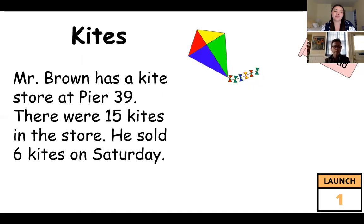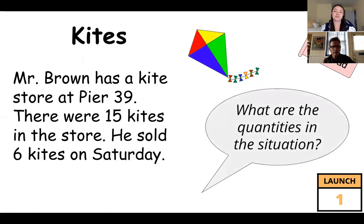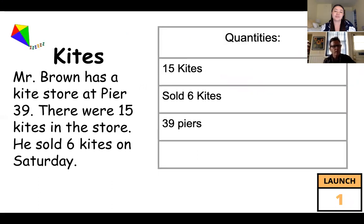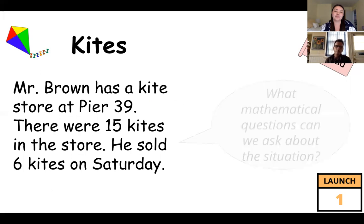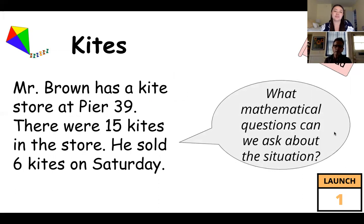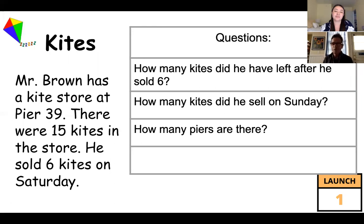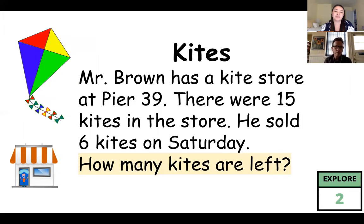In the second read, you read the problem again and ask students: what are the quantities in the situation? Students would typically say there are 15 kites, he sold 6 kites, there are 39 piers — they come up with all kinds of quantities. In the third read, you read the story aloud or have kids chorally read it, and start thinking about what mathematical questions can be asked about the situation. Questions kids typically come up with: how many kites did he have left after he sold six? How many kites did he sell on Sunday? How many piers are there?